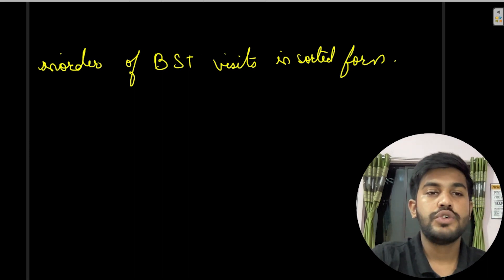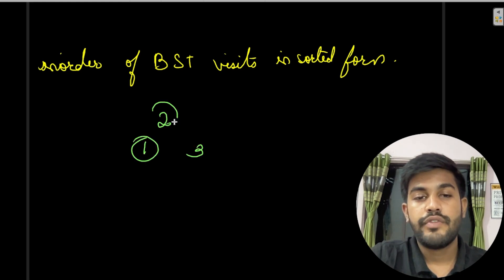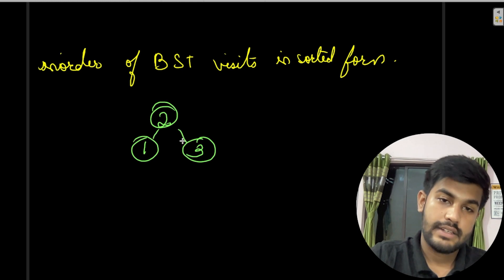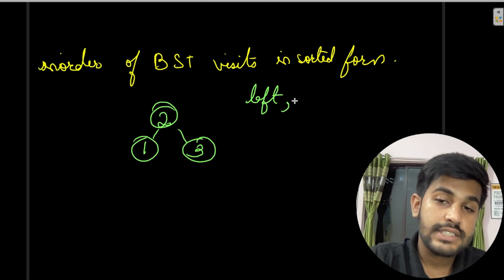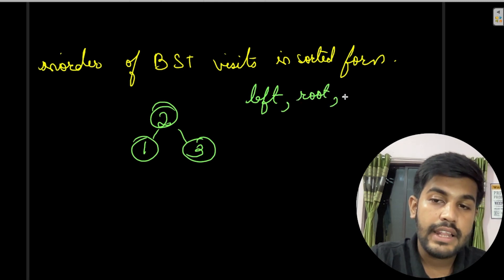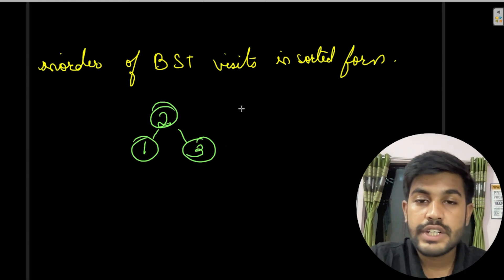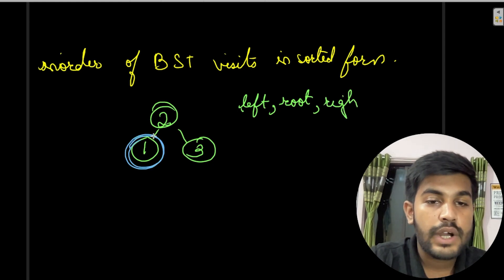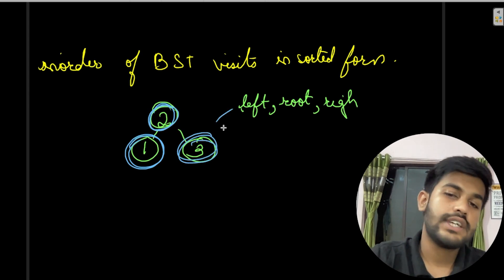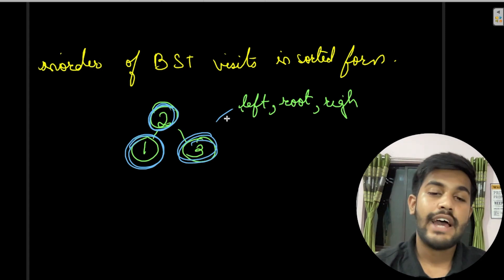For example, consider a tree with root 2, left child 1, and right child 3. In-order traversal is left, then root, then right. So we visit 1, then 2, then 3 — in sorted order. This holds for any BST, no matter how large.